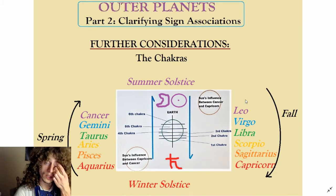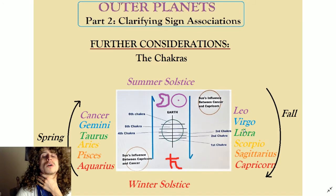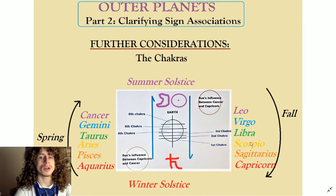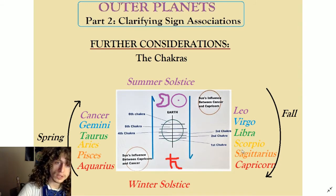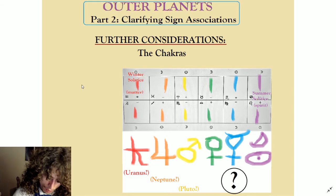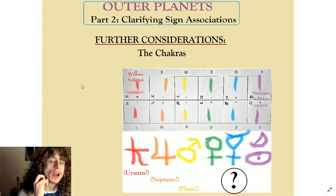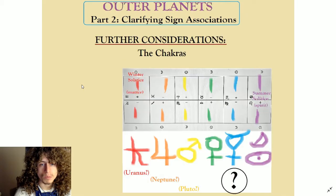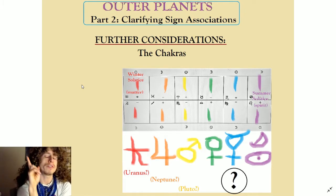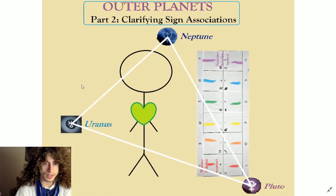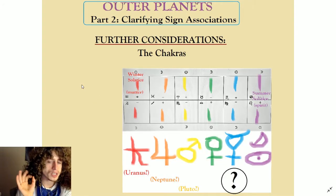Then we have a fall that happens, where the sun starts to move down the earth's chakras. In Leo, it's spirited. Virgo, throat chakra. Libra, Venus, heart chakra. Scorpio — angry, possessive, obsessive — third chakra, solar plexus. Then Sagittarius and Capricorn. So you can see what's going on here. Now, what's interesting is when we start to think about how Uranus, Neptune, and Pluto fit into this. There are two possibilities. The first one is to consider — and it could be true — is this association of Uranus with Aquarius, Neptune with Pisces, etc.